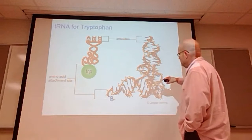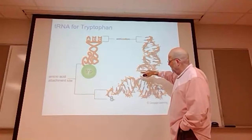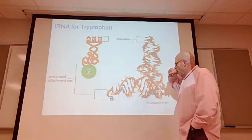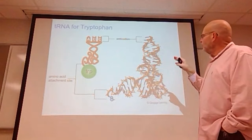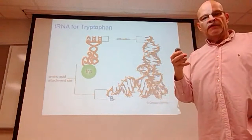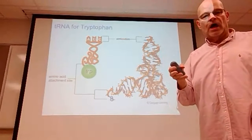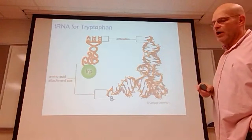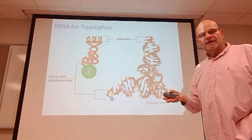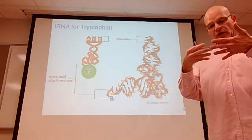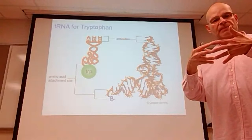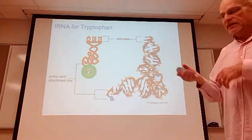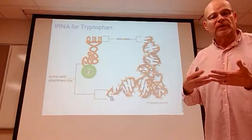Here is an illustration showing tRNA for tryptophan. The DNA uncoils, the RNA transcript is made, and tryptophan comes in. The three-letter combination on the transcript is the codon; the three-letter combination on the amino acid is the anti-codon. Codons and anti-codons are complementary pairs: A pairs with U, C pairs with G.